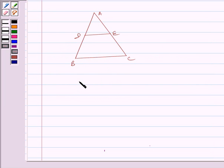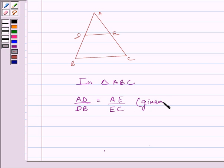That is, if in triangle ABC, AD upon DB is equal to AE upon EC, then by converse of basic proportionality theorem, we get DE is parallel to BC.